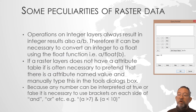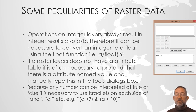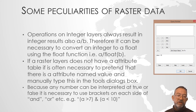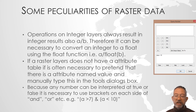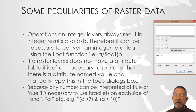One important annoyance: if you perform operations on integer raster values — two integer raster layers, or a raster layer and an integer — the output will always be an integer. For example, a layer of fives divided by a layer of twos will return 2 or 3 as an integer, not 2.5. The fractional part is lost.